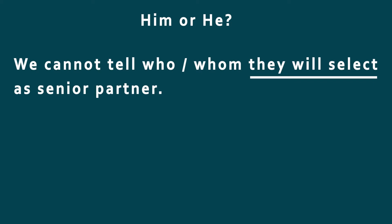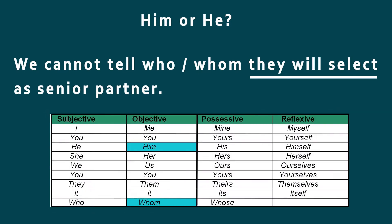If you correctly chose 'him,' then you would use 'whom' in the original sentence. This is because both 'him' and 'whom' are object pronouns, as shown on this chart.